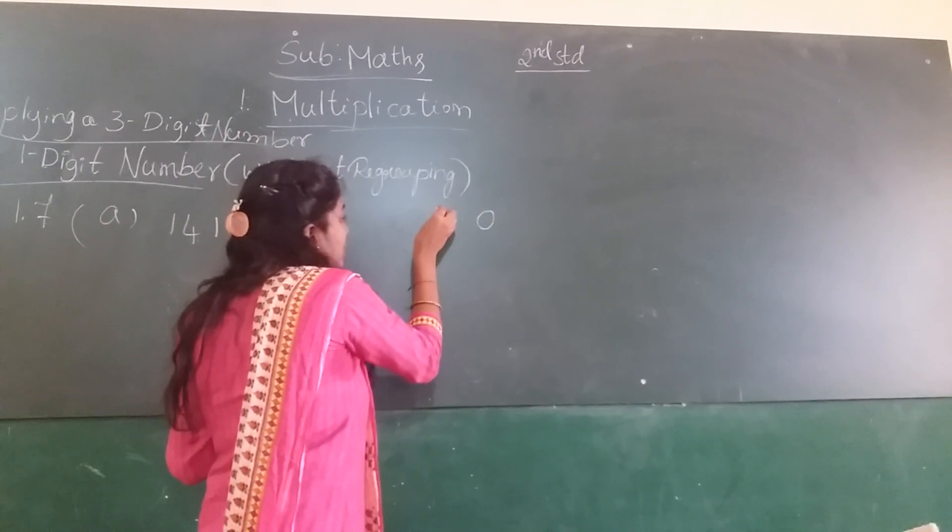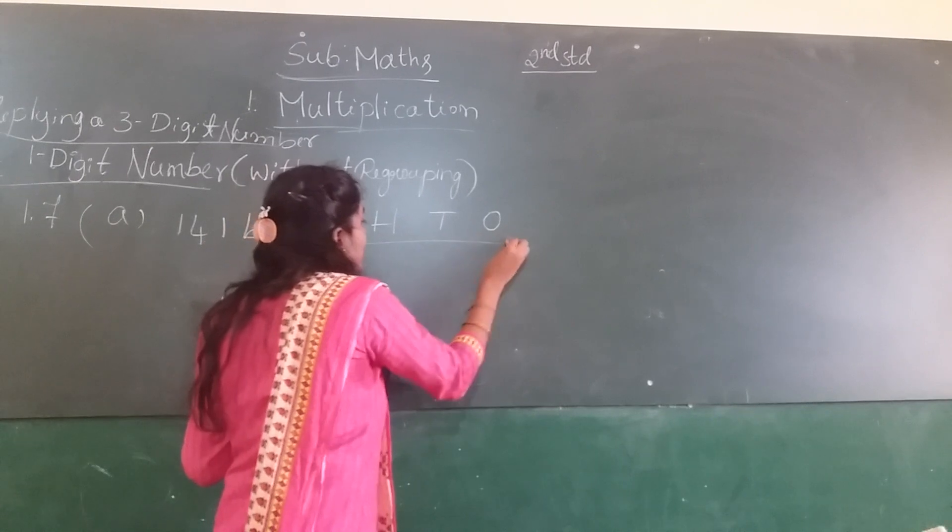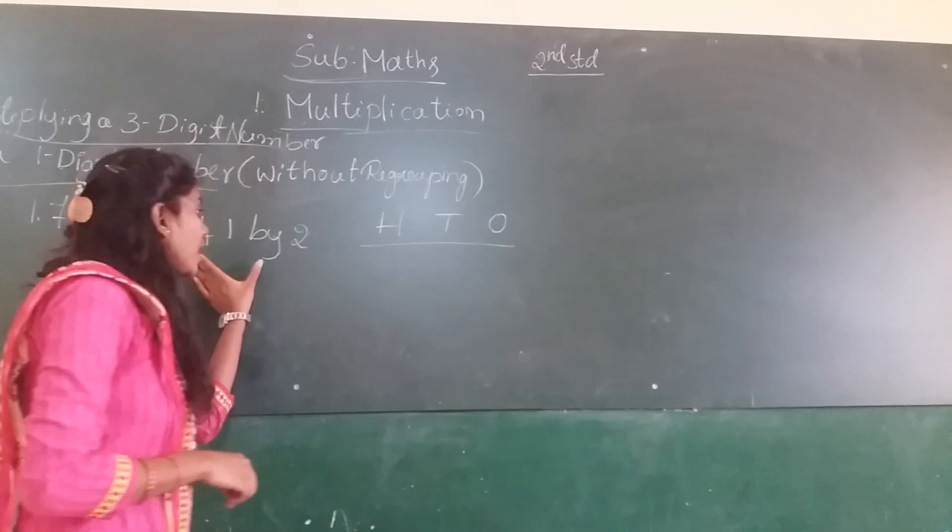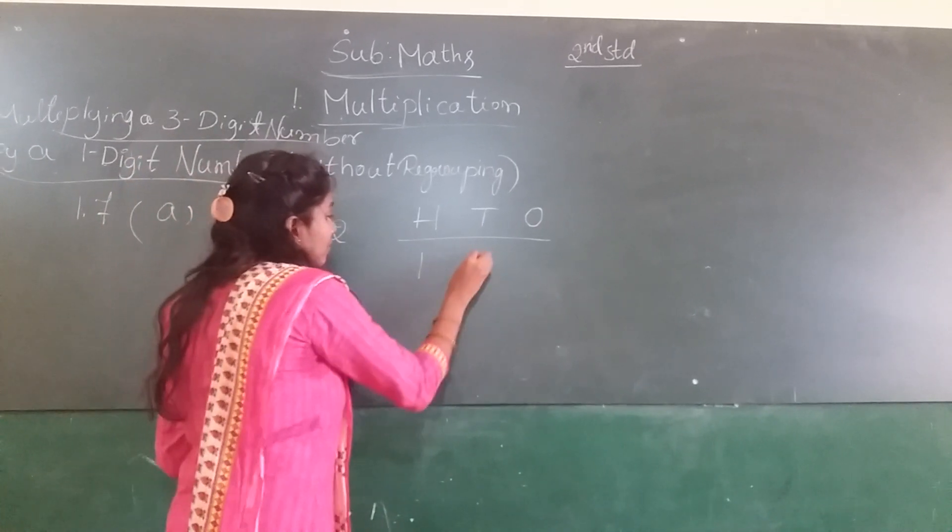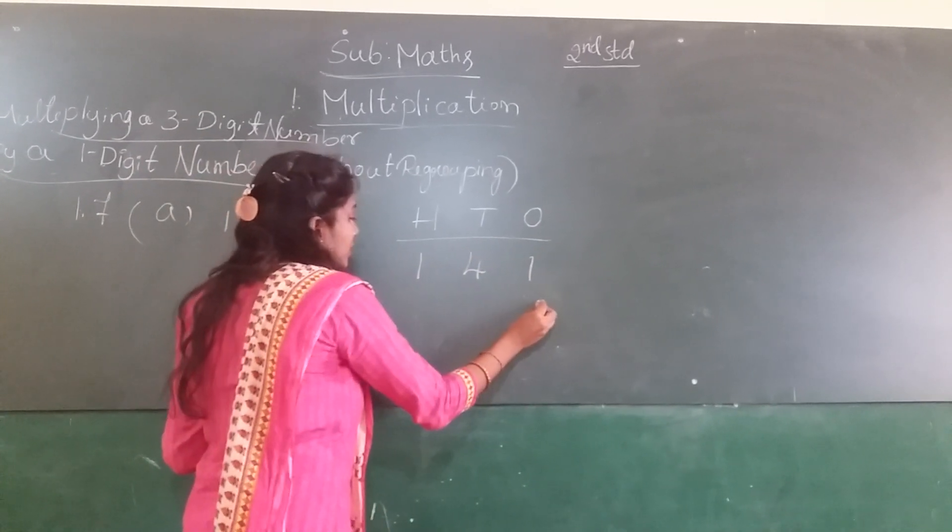Ones, tens, hundreds. So this is the column and next arrange the numbers in a place value chart. So 1, 4, 1 and 2.